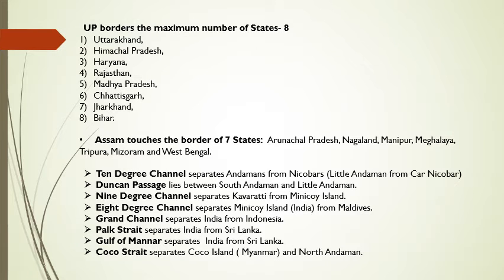Uttar Pradesh ek maatr bharat ka rajya hai jo 8 anyi rajyon ke saath apni seema banata hai — Uttarakhand, Himachal Pradesh, Haryana, Rajasthan, Madhya Pradesh, Chhattisgarh, Jharkhand, Bihar. Assam aisa rajya hai bharat ka jo 7 rajyon ki seema ko chhuta hai — unme se Arunachal Pradesh, Nagaland, Manipur, Meghalaya, Tripura, Mizoram aur Pashchim Bangal hain.